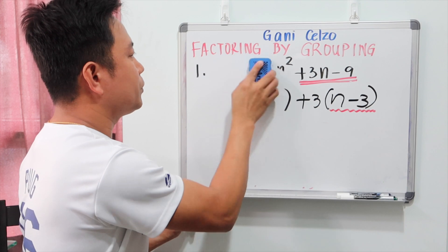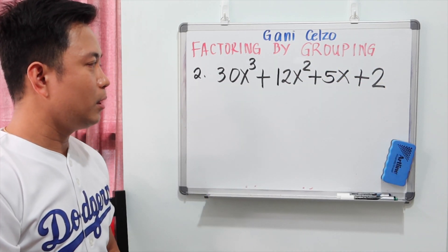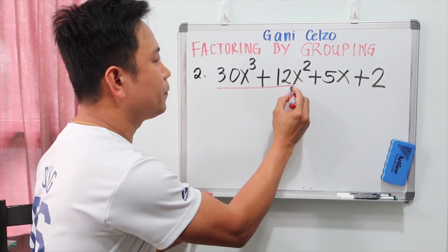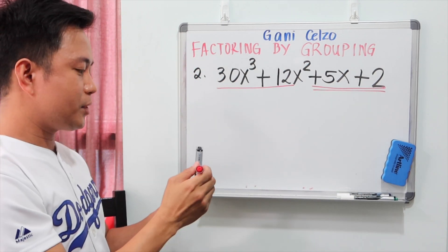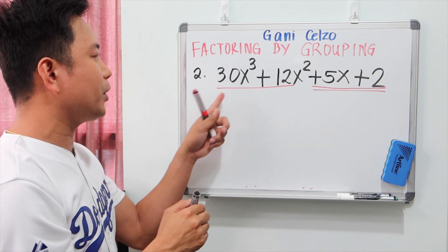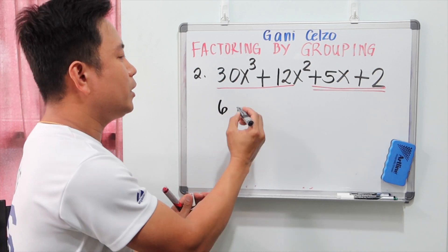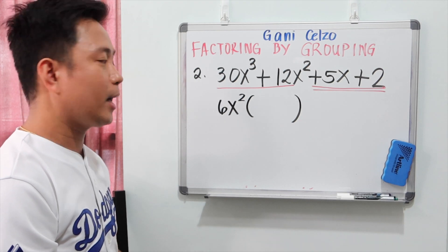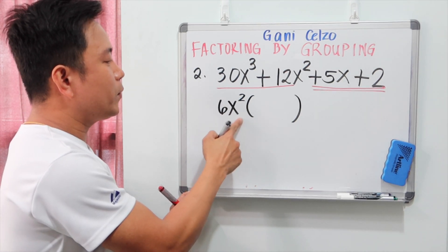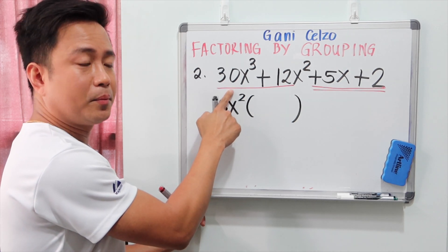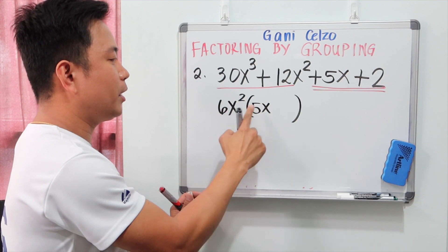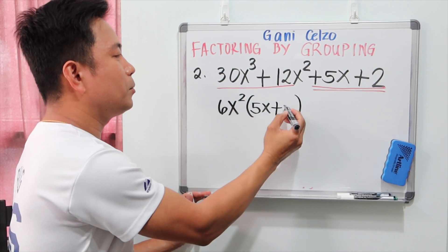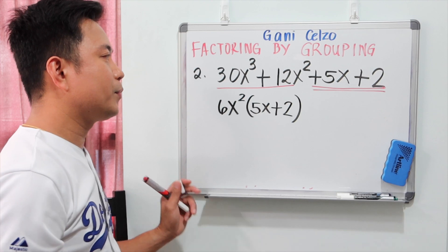Let's look at example 2. We have a polynomial with four terms. The first two terms form our first group, and the last two form our second group. The GCF of 30 and 12 is 6, and we include x squared as the smallest power of x. So we factor out 6x squared. 6x squared times 5x gives 30x cubed, and 6x squared times 2 gives 12x squared. So inside the parentheses we have 5x plus 2.